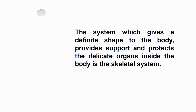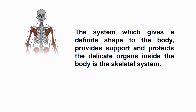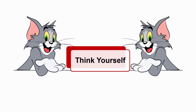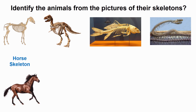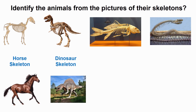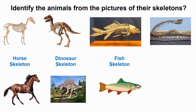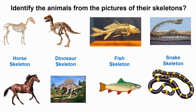The system which gives a definite shape to the body, provides support, and protects the delicate organs inside the body is the skeletal system. Now, identify the animals from the pictures of their skeletons. The first picture is the skeleton of a horse; the second is the skeleton of a dinosaur; the third is the skeleton of a fish; and the fourth is the skeleton of a snake. In the next video, we will discuss parts of the human skeletal system, joints and types of joints, and the skin. Thank you for watching this video. Keep learning and keep sharing.